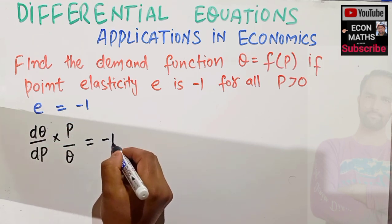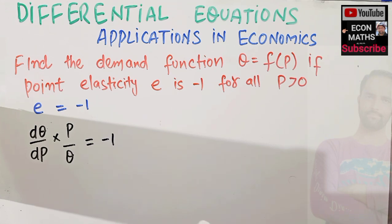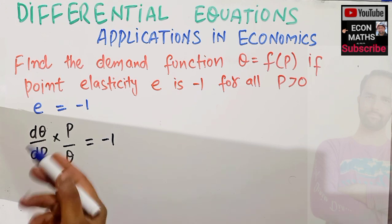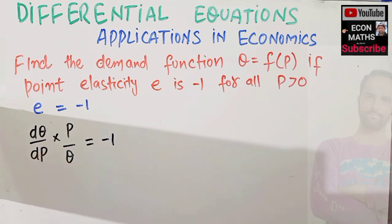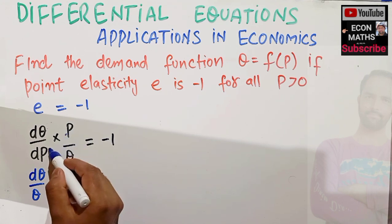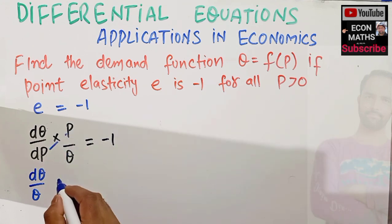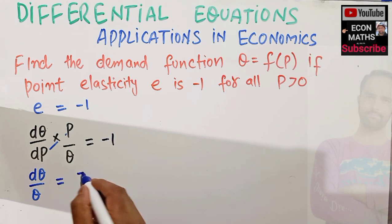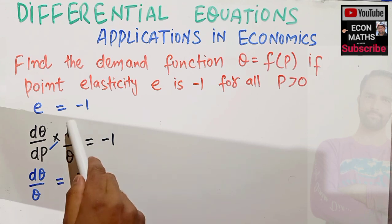Now here we will use a method in solving this question, what we call the separation of variables. If we can separate the variables, we will see here. So first thing is what will I write, we have dQ upon Q here. So let me write it in this fashion, dQ upon Q. Now transpose this P upon dP to RHS, it will become minus dP, it will get reciprocated, upon P.